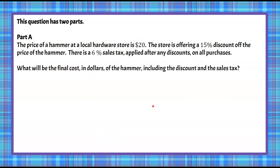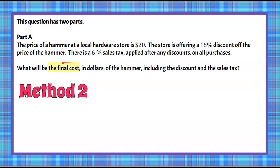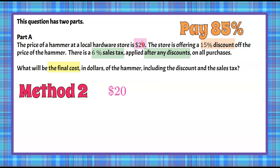Now let's look at this using another method — Method 2 — for the same Part A question: finding the final cost of a hammer that costs $20 with a 15% discount and 6% sales tax after the discount. If we take 15% off the item, we know that we're actually paying 85% of the $20. So if we multiply 20 by 0.85, on your calculator 20 times 0.85 is $17 — the same result as Method 1.